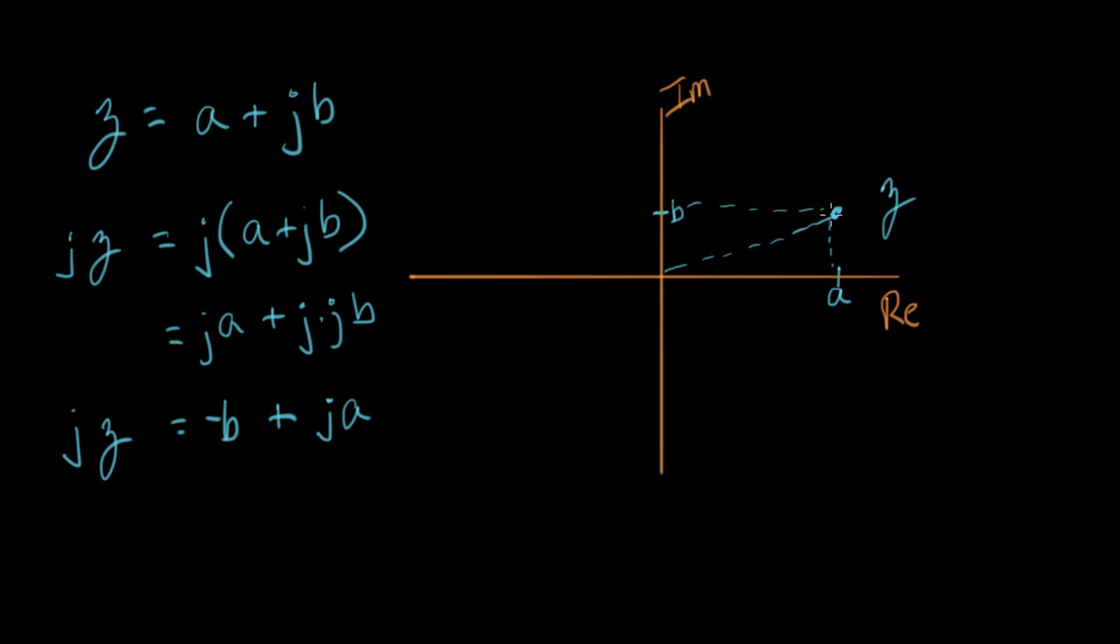That's z in the complex plane. So now let's put jz on the same plot. jz has a real component of minus b, so that would be right about here. Here's minus b. And it has an imaginary component of plus a. So let's swing a. A goes all the way up to about here. And so that's the location of jz.